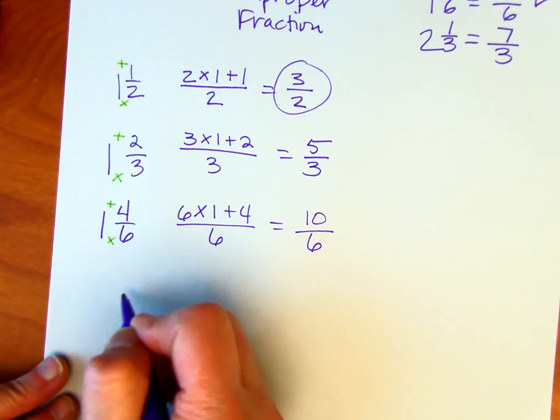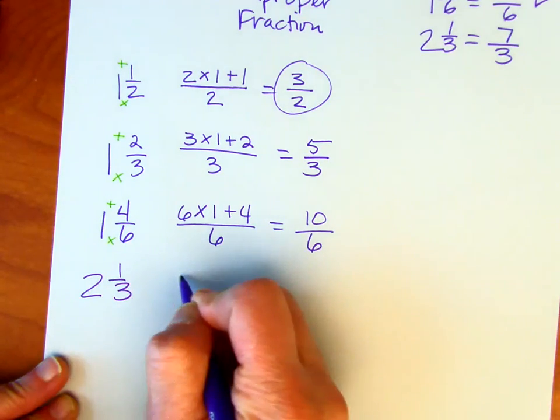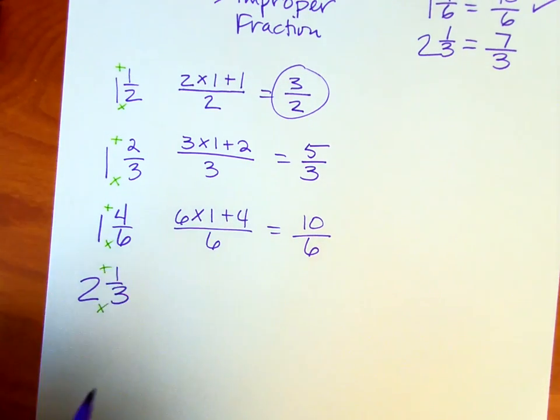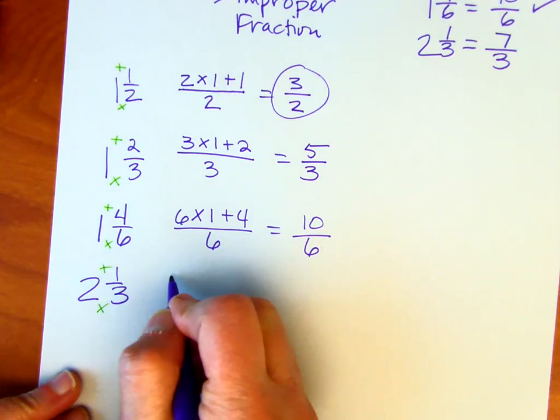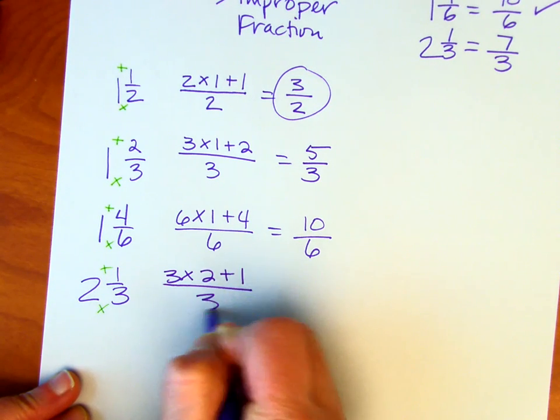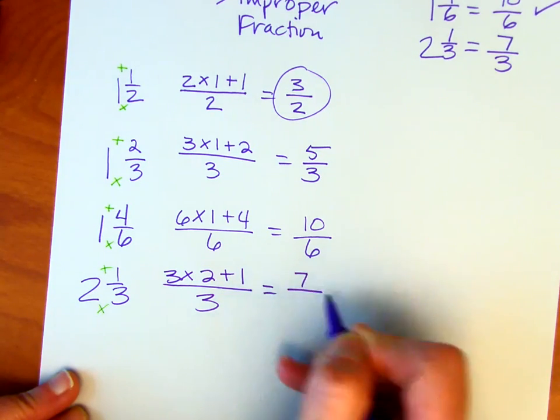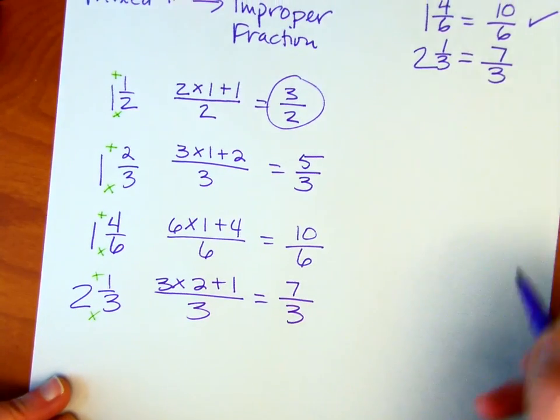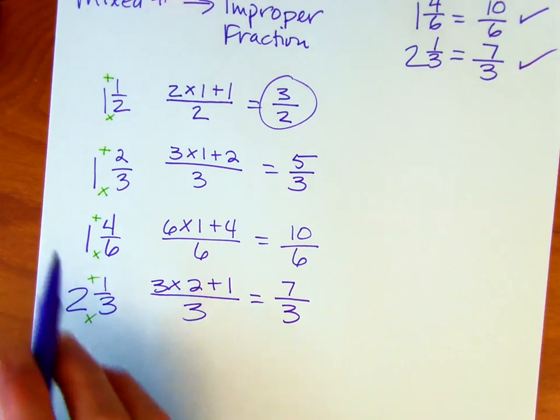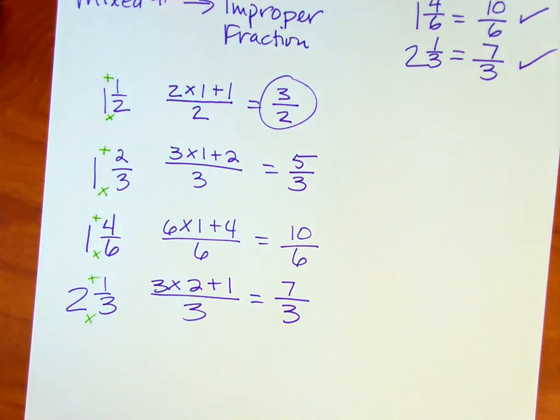And the last one was two and one-third, and that's going to be three times two plus one over three. Three times two is six, plus one is seven, and three is my denominator. So this is the way that you're going to be converting a mixed number to an improper fraction.